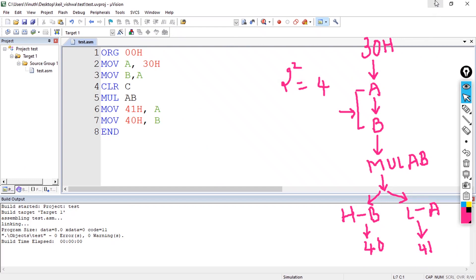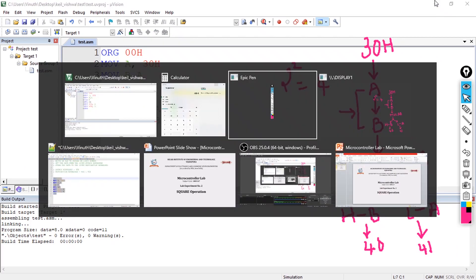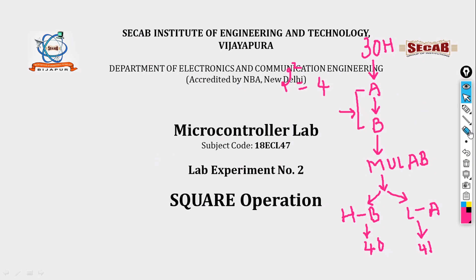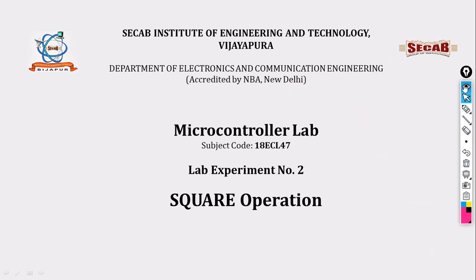So this is how we perform the square operation — it is simply multiplication of a number by itself. We have completed the square operation, and in the next lecture we shall look into the cube operation.